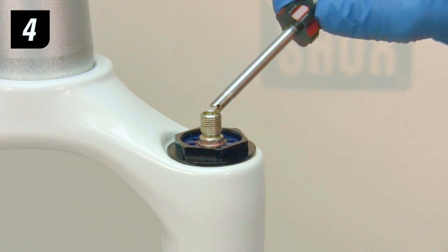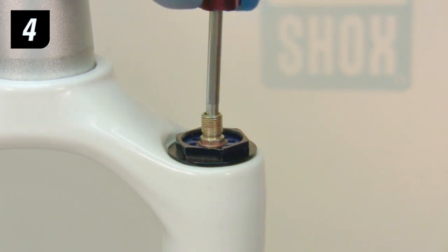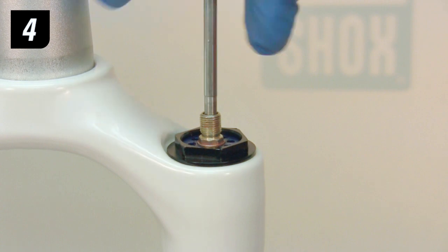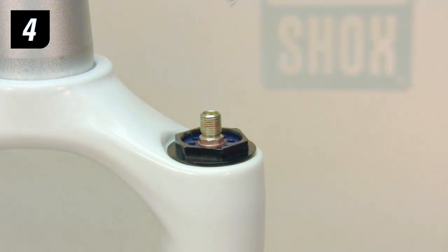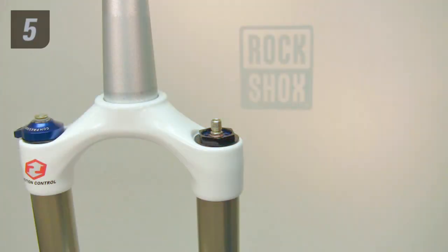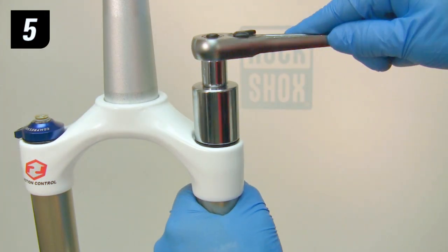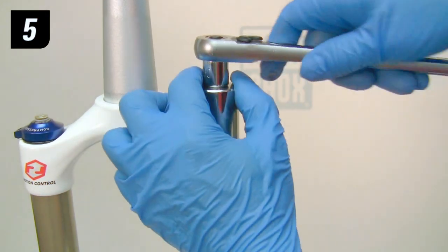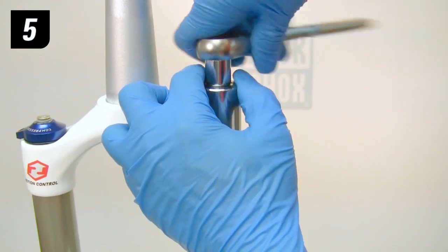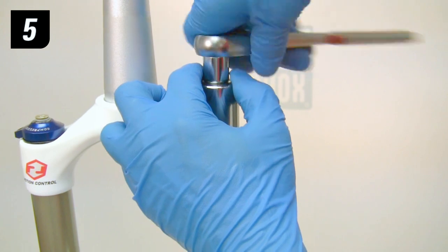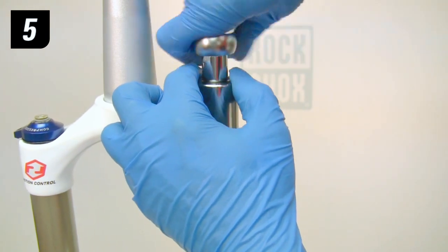Step 4. Use the Schrader valve tool to remove the Schrader valve core. Step 5. Use the socket wrench with a 24mm socket to loosen the air top cap. Keep constant pressure on the socket as you turn it, so that it doesn't slip and damage the fork.